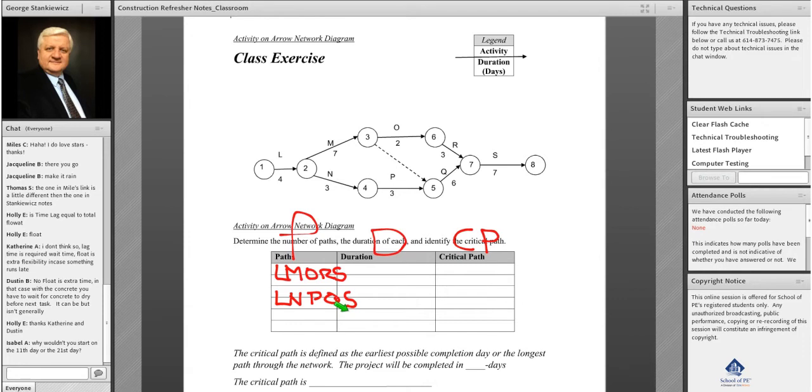Is there any other path? Well, the dummy is a path. The dummy is a logic provider in the project schedule. They do not have any resources associated with it and there is no time, but it's a valid path, so it provides us with the logic. So we have L, M, Q, S.